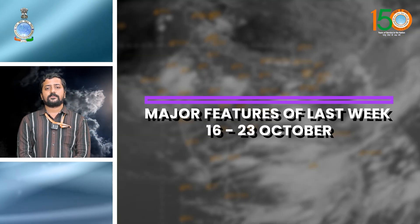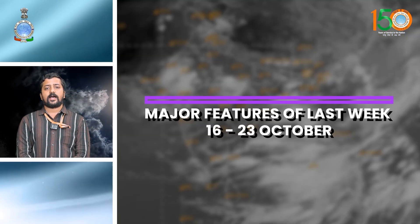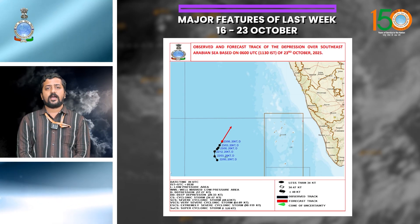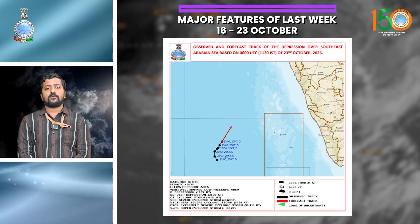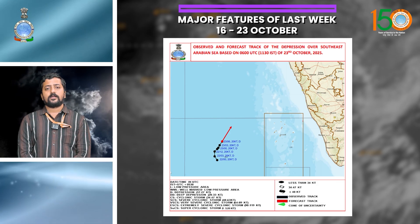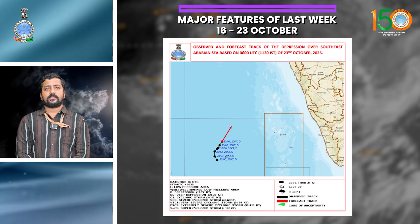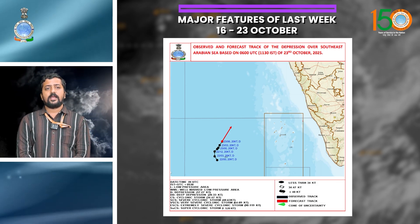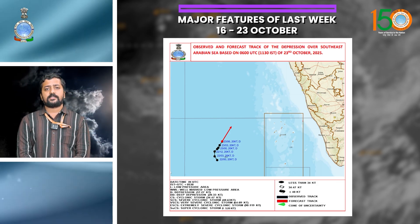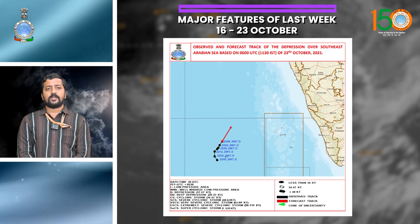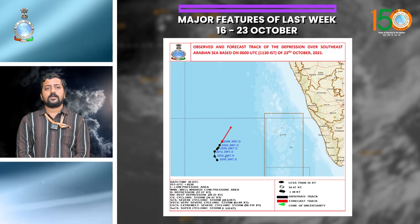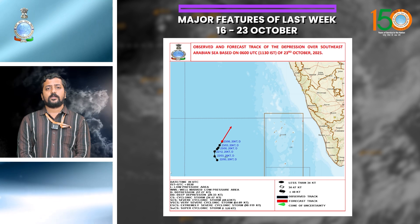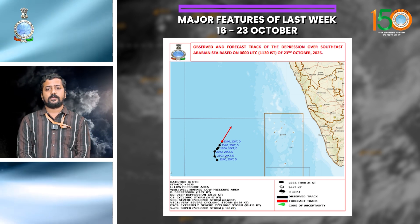Looking into the major weather systems observed during the last week, a low pressure area had formed over Southeast Arabian Sea and Lakshadweep area around 18th of October, subsequently becoming a well-marked low pressure area over the same region. It persisted over the same region on 20th and 21st October, concentrating into a depression on the 22nd of October over Southeast Arabian Sea.